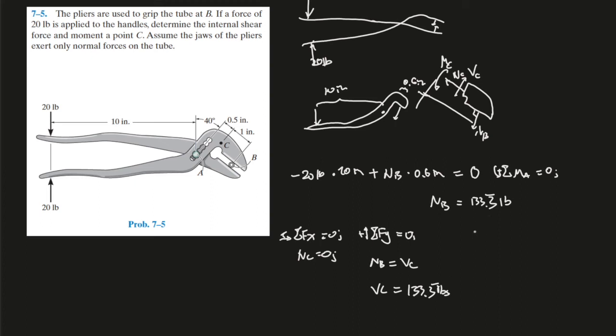And last one, use sum of the moments. Sum of the moments, going this way, it's positive. Sum of the moments at C equals to zero. NB will generate some force, NB times one inch. And it's going this way, counterclockwise, so it's positive minus MC over here. We'll draw the direction wrong, so it's supposed to be going this way. NB times one inch minus the moment at C gives us zero, so moment at C should give us 133.3 foot-pounds. And here we have it. The answer for this question.